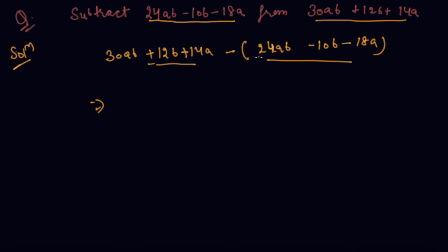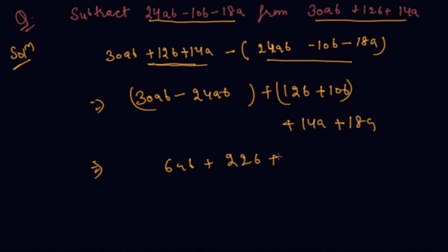So now I will add or subtract the like terms. I will take like terms. Here is these two plus 12B minus minus minus plus plus 10B plus 14A minus minus plus plus 18A. So this will be 6AB + 22B + 32A.